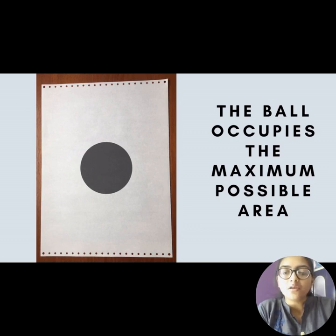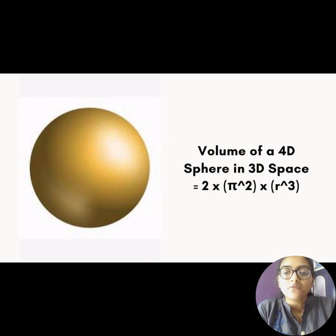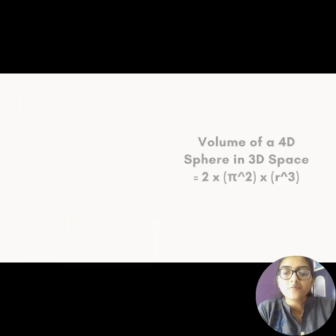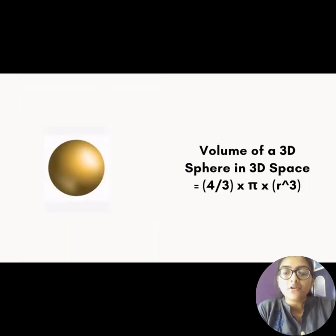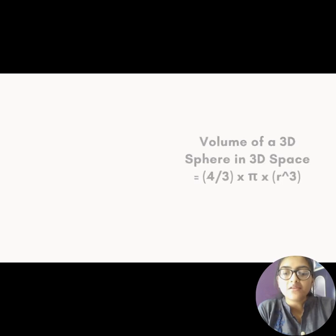Similarly, when we consider a 4D dimensional ball in our 3D space, contrasting it to the situation of 2D objects in 3D space, the size of the 4D dimensional ball will first increase up to a certain maximum volume and then decrease and at last vanish. The volume of a 4D dimensional sphere in 3D space is 2π² × r³, where r is the radius of the sphere, whereas the volume of a 3D sphere in 3D space is (4/3)πr³, where r is again the radius.